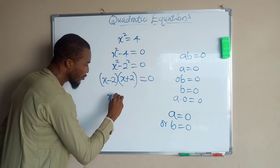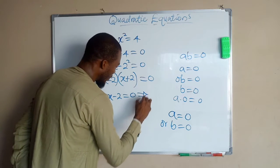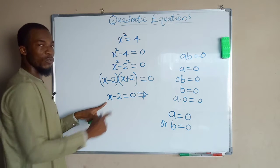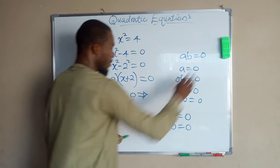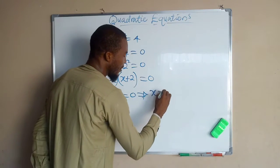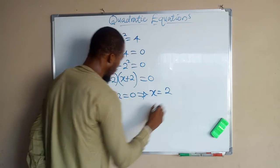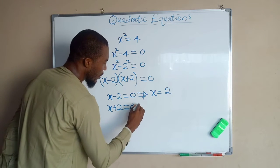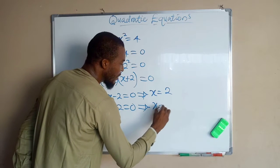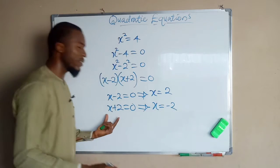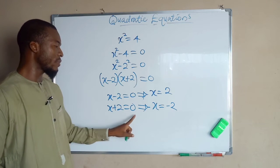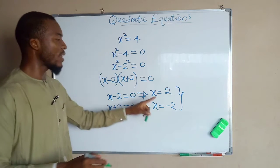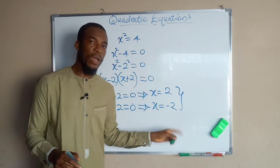We set each factor equal to 0. If we set x minus 2 equal to 0, this implies that x must equal 2 because 2 minus 2 is 0. And for the second factor, x plus 2 equal to 0 implies x must equal negative 2, because negative 2 plus 2 is 0. Hence, the two real values of this equation are positive 2 and negative 2.